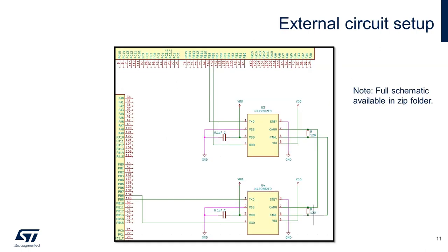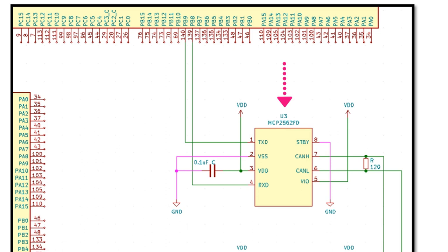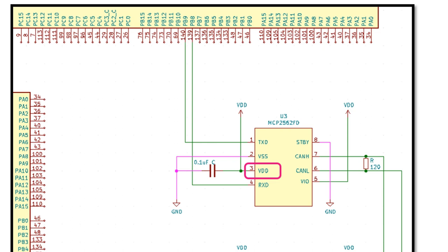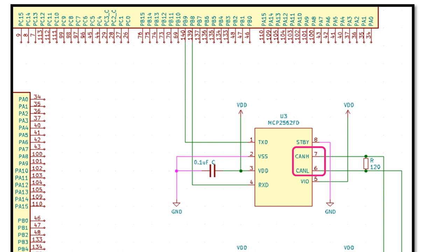The schematic illustrates the external circuit comprising Microchip's CAN-FD transceiver, each interfacing with FD-CAN-1 on two different Nucleo boards. Pin PB9 on the Nucleo board connects to the TX pin of the transceiver. VSS connects to ground, VDD connects to 5V, and RX connects to PB8. Pin 5 is also connected to VDD. Pins 6 and 7 are connected between the two transceivers to form the CAN bus. Finally, pin 8, the standby pin, is connected to ground to run the transceiver in normal mode, as described in the transceiver datasheet. The full schematic is in the zip folder linked in the description.